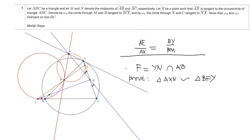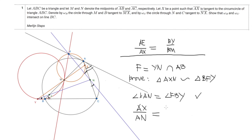So it is sufficient to prove this similarity between the triangles. Let's start looking at the angles. First, we prove that angle XAN equals angle FBY. Angle XAN equals pi minus angle NAB, and by the tangent line XA to the circumcircle, this angle equals angle ABC. So pi minus angle ABC is exactly angle FBY. The second thing we prove is that AX over AN equals FB over BY.